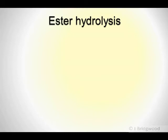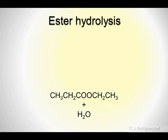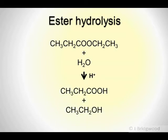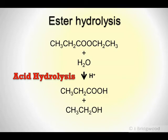Now it is possible to reverse this reaction by taking an ester with water and adding an acid catalyst again. You can drive this reaction in the reverse direction to produce the carboxylic acid and alcohol. So for ester hydrolysis, you are taking ethyl propanoate plus water to go to propanoic acid plus ethanol. This is known as acid hydrolysis because you use an acid catalyst.